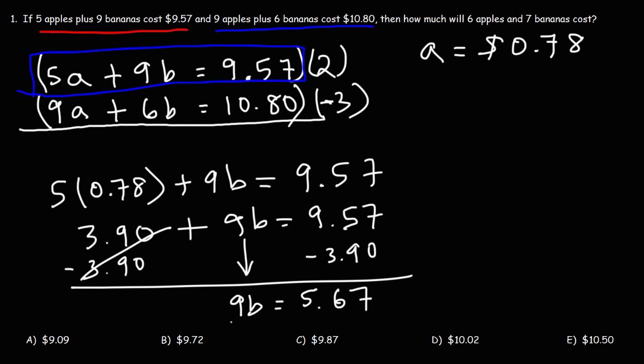Now the next thing we need to do is divide both sides by 9. So B is going to equal 5.67 divided by 9, which is 0.63. Therefore, the cost of each banana is 63 cents.